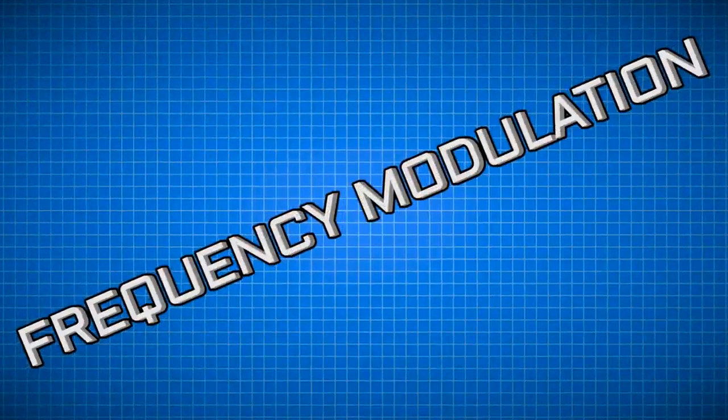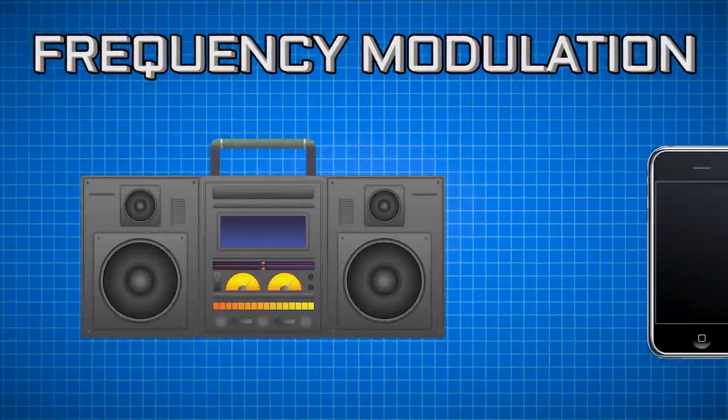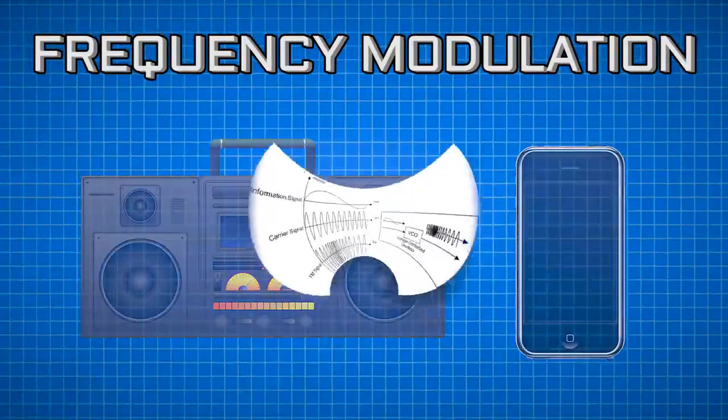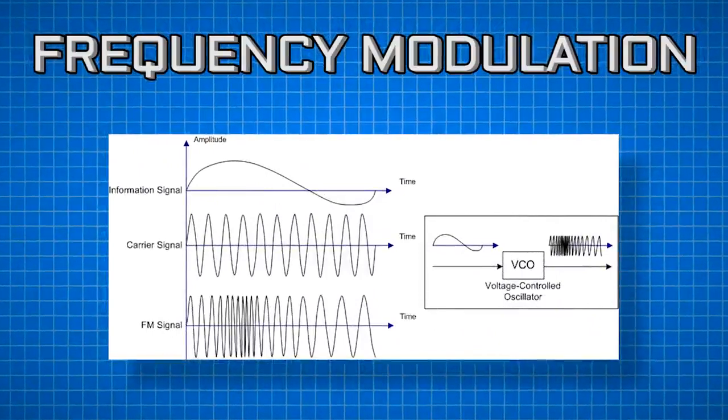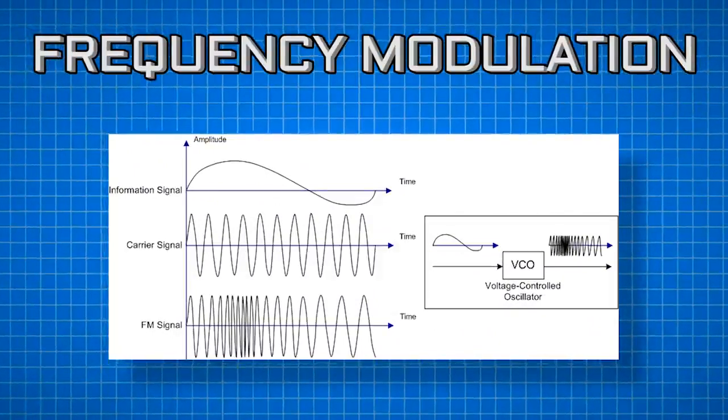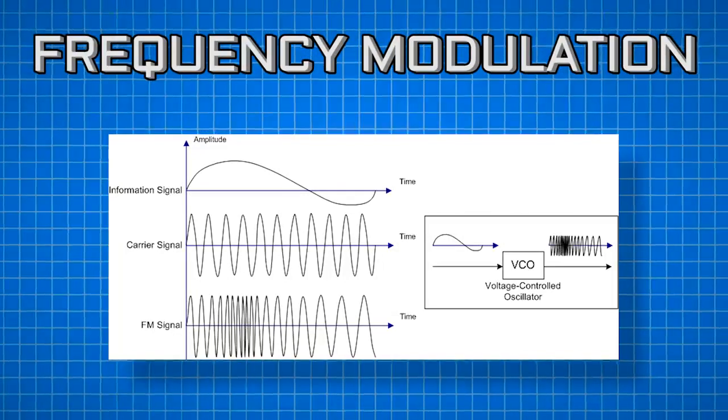otherwise known as FM, is used for FM radio and tons of other wireless tech. In this encoding technique, the sine wave frequency changes slightly based on the signal. This means that the distance between the peaks of the waves is varied based on the data that's trying to be transmitted.